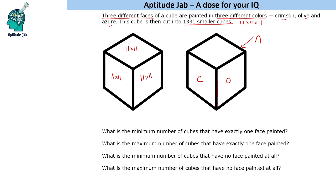Looking at any painted face, the border cubes have at least two faces painted because an adjacent side is also painted. So we remove those border columns shared with other painted faces. We won't exclude the border on the non-painted side. After removing borders shared with adjacent painted faces, each face is reduced from 11×11 to 10×10, giving 100 cubes each.